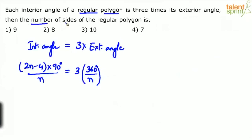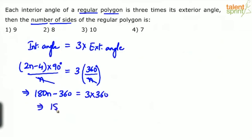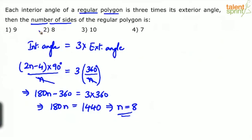Solving for n: n cancels on both sides, giving 180n − 360 = 3 × 360 = 1080. So 180n = 1080 + 360 = 1440, and therefore n = 1440 ÷ 180 = 8. The number of sides is 8, which is option 2.